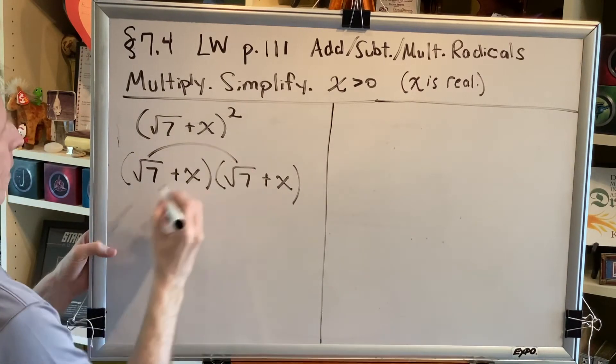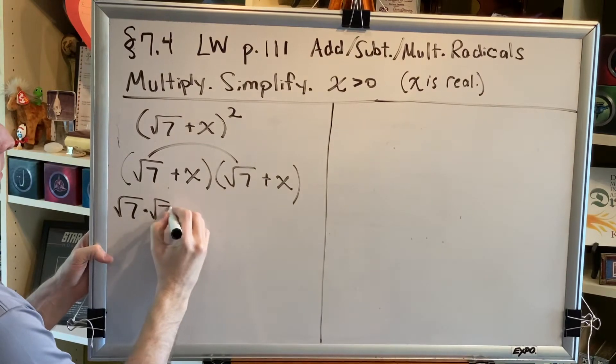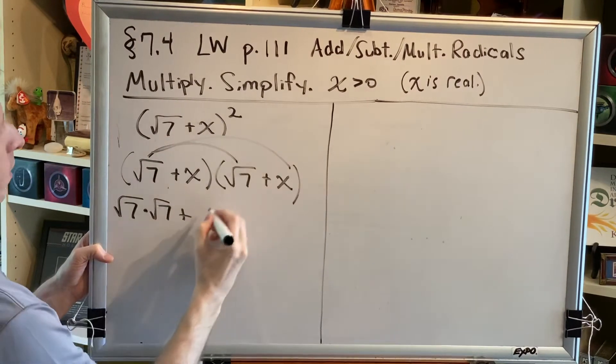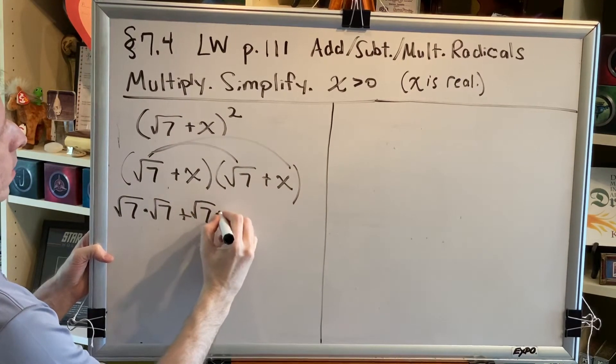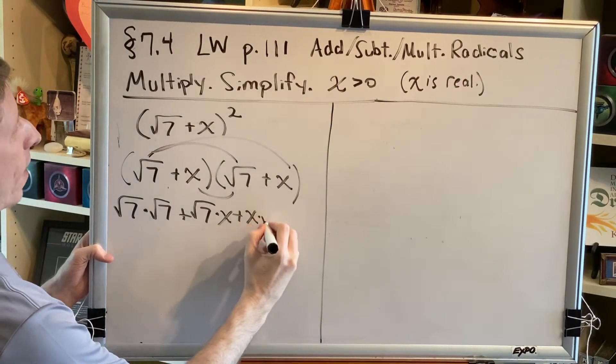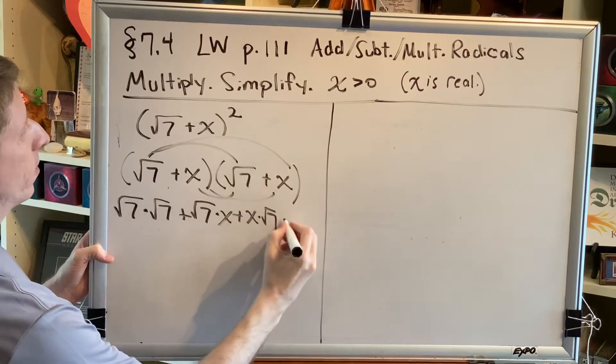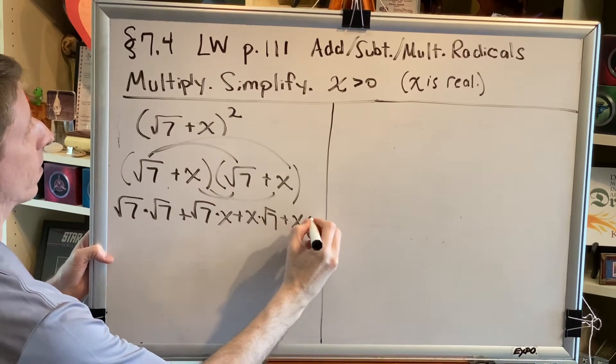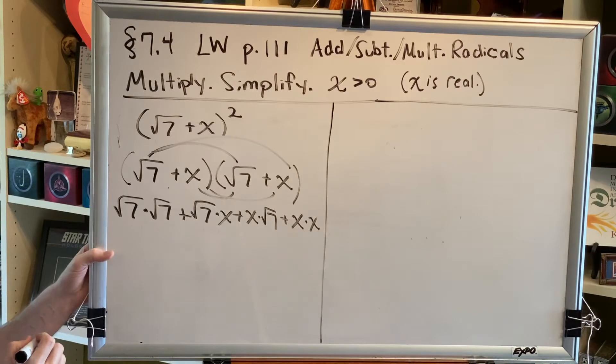We've got the square root of 7 times the square root of 7, plus the square root of 7 times x, plus x times the square root of 7, plus x times x. Let's put these things together.